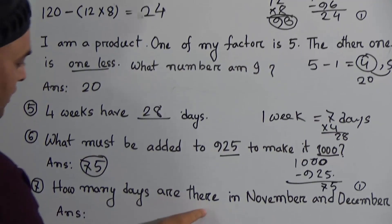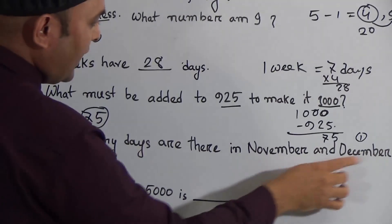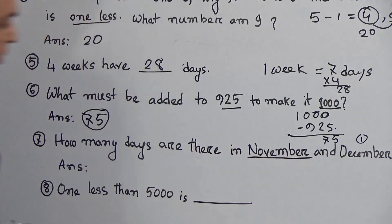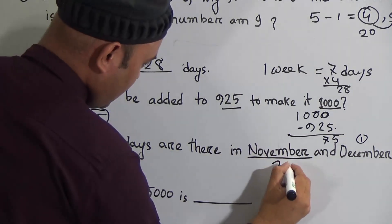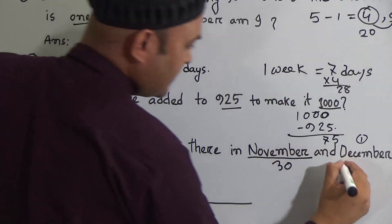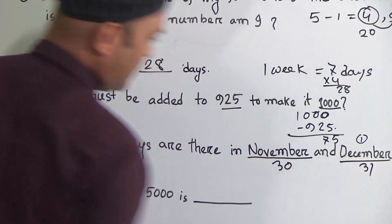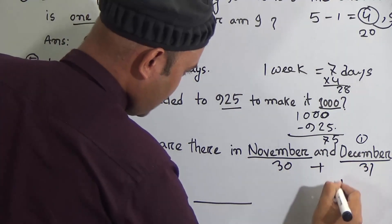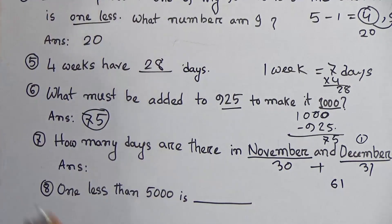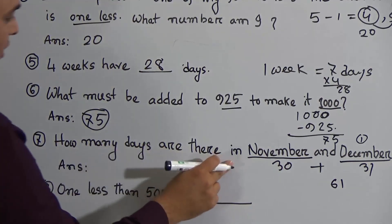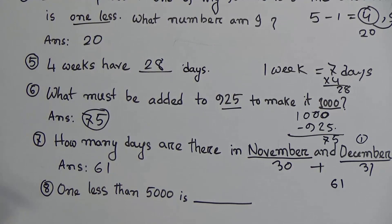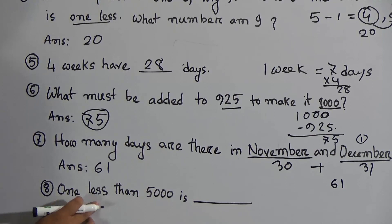Next: how many days are there in November and December? November has 30 days and December has 31 days. So 30 plus 31 equals 61. Therefore there are 61 days in November and December together.